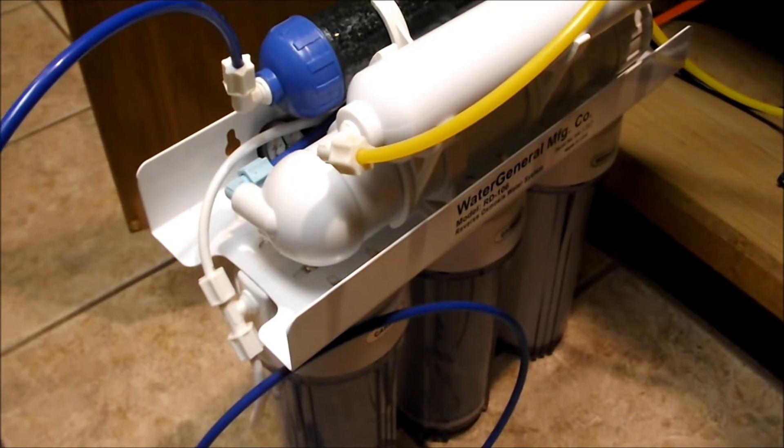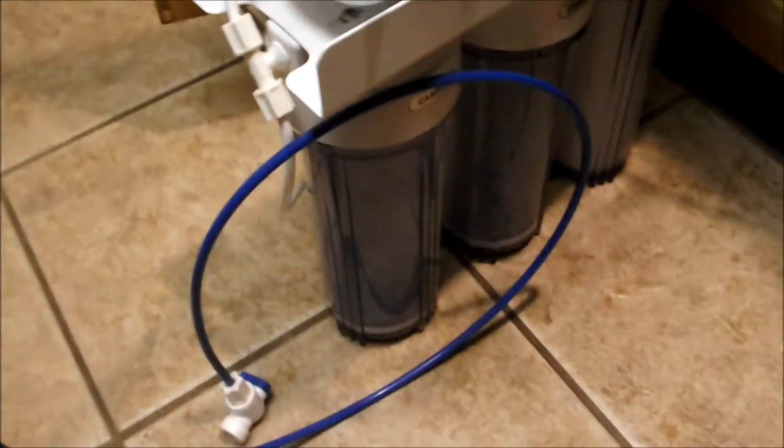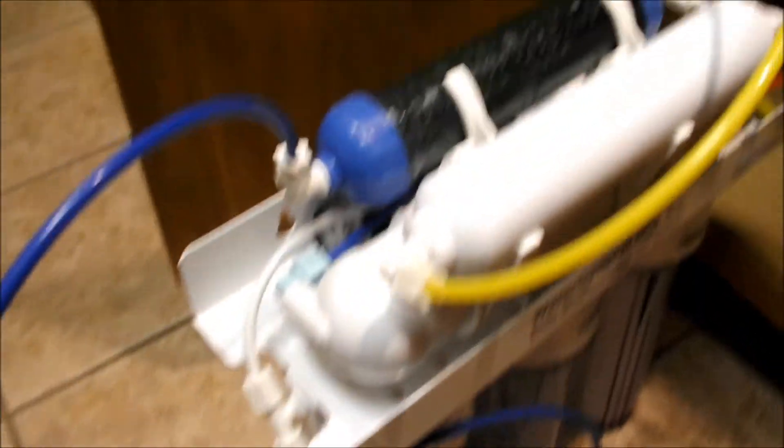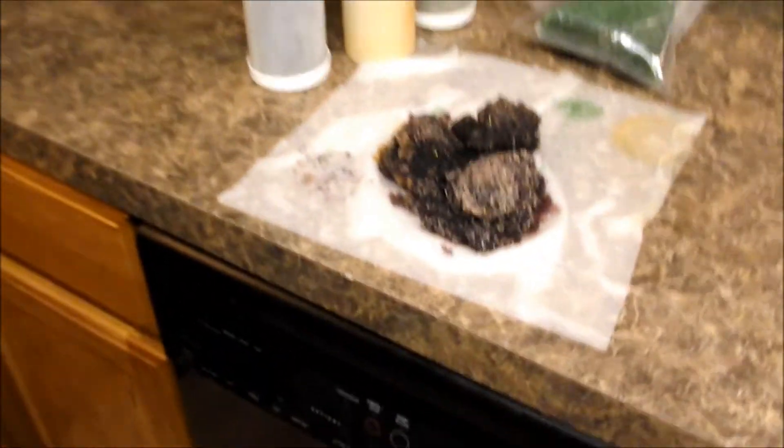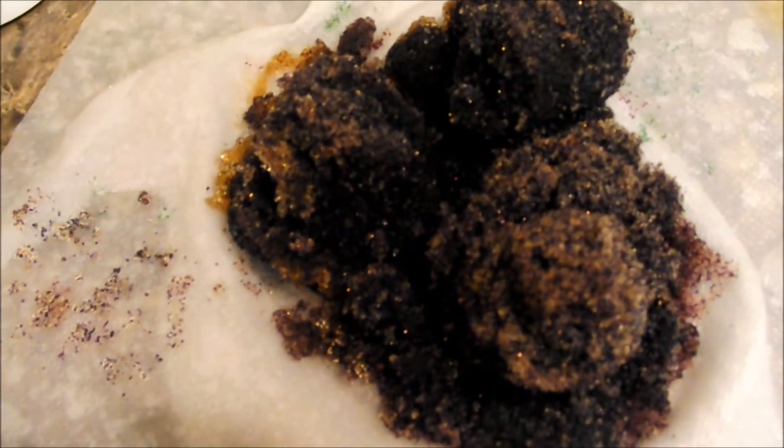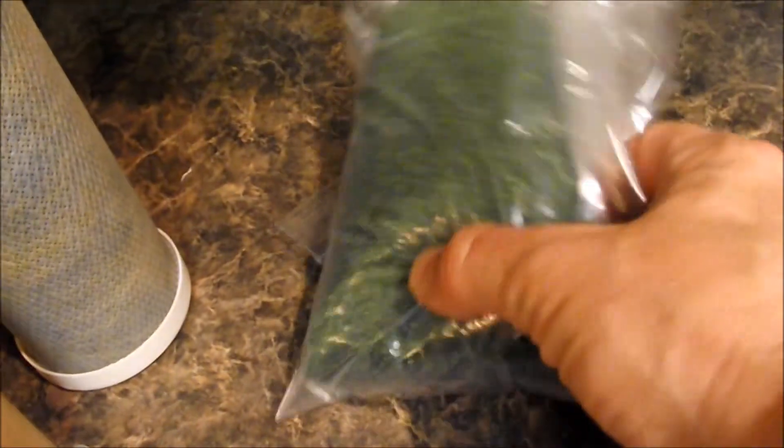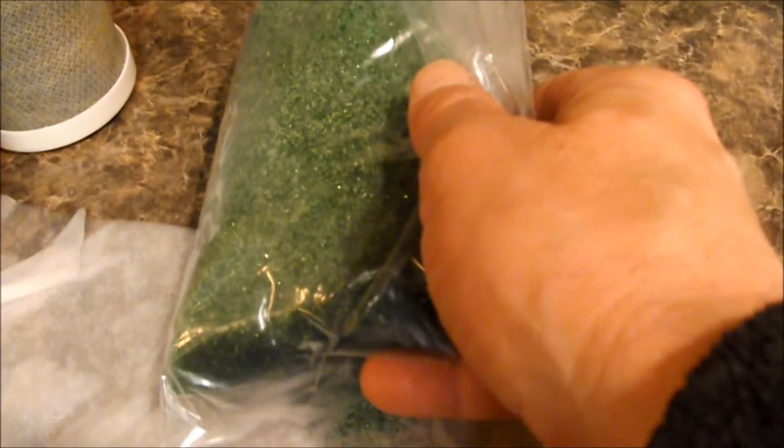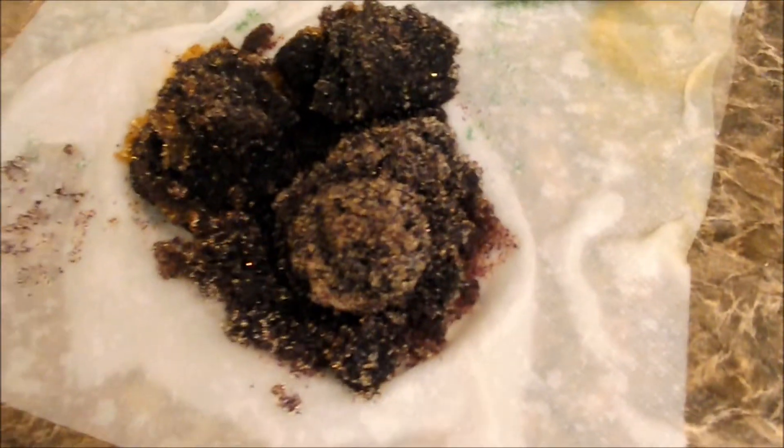And this is definitely the culprit. I just got done changing out all three filters plus my DI resin. And here we go, that is the old DI resin. This is what it's supposed to look like - it's got that nice bright green. See if I can get it without glare. There we go, nice green. That is definitely black.